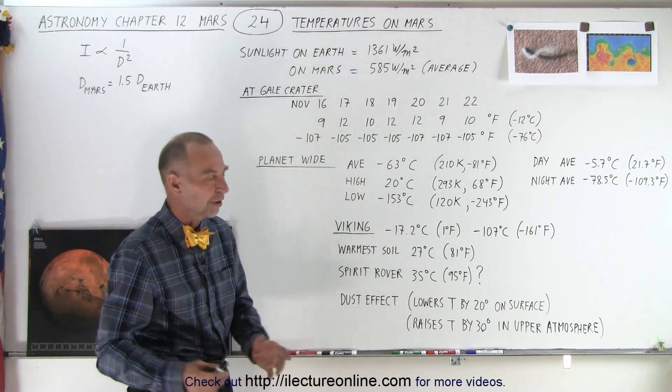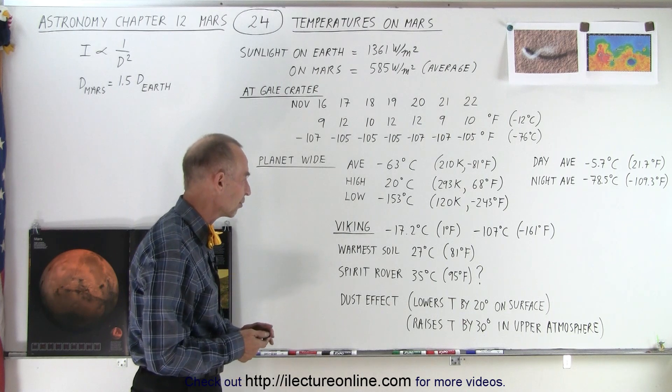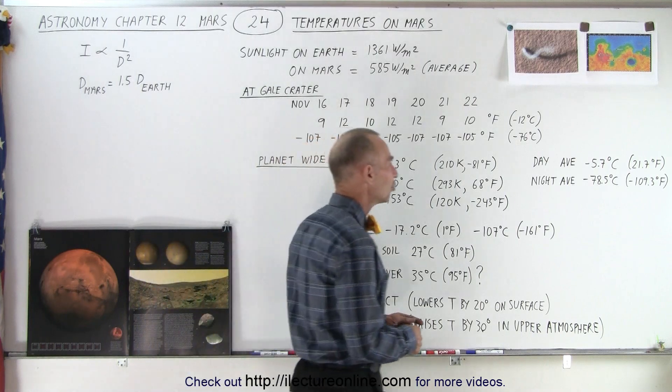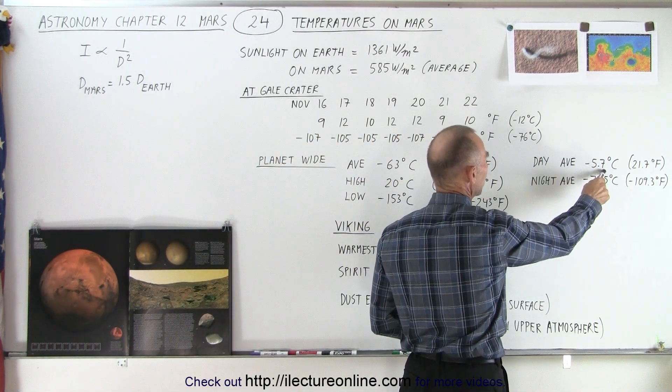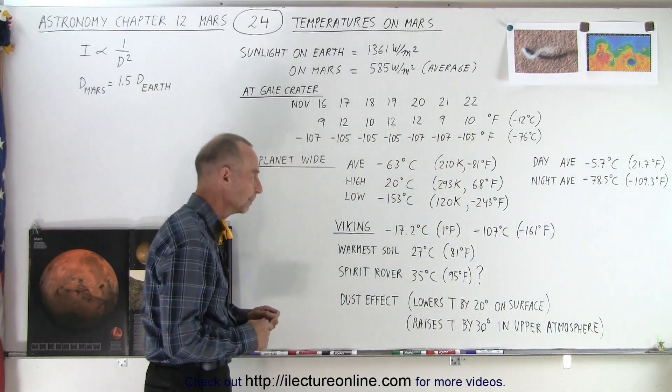You can see those temperatures are quite low. The day average is about minus 5.7 degrees centigrade in the more temperate region, and the night average is about minus 78.5 degrees in the more temperate region near the equator.